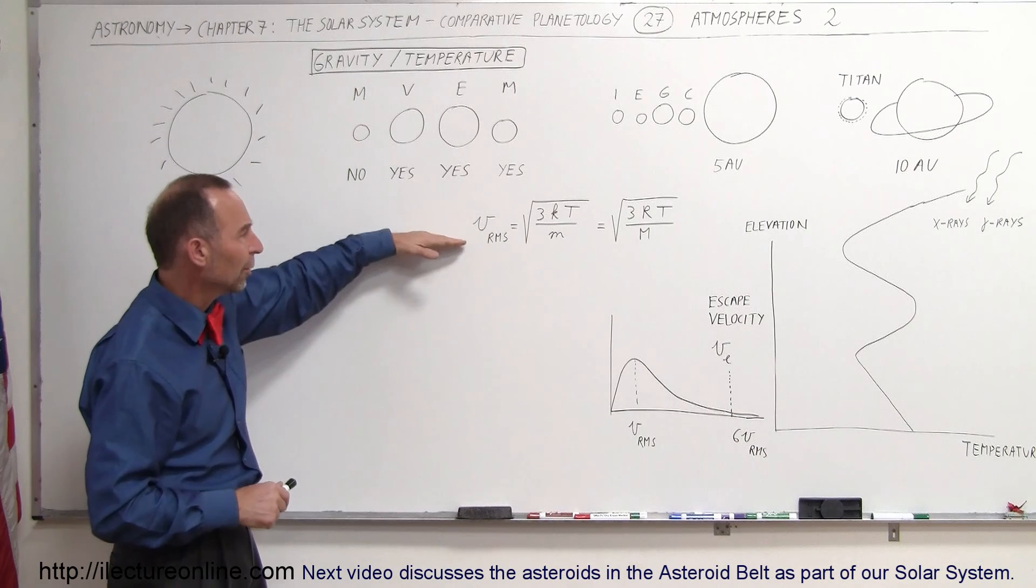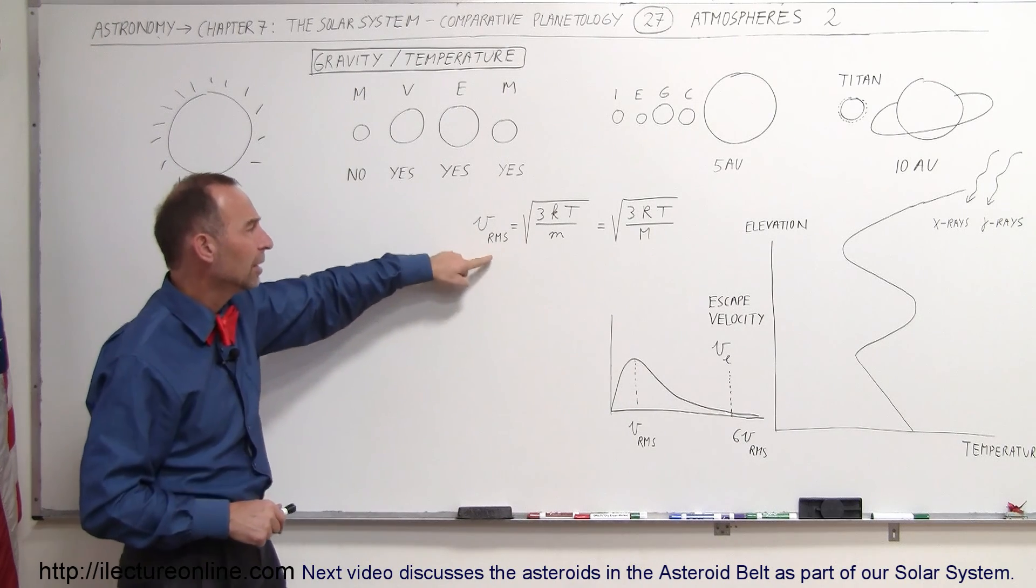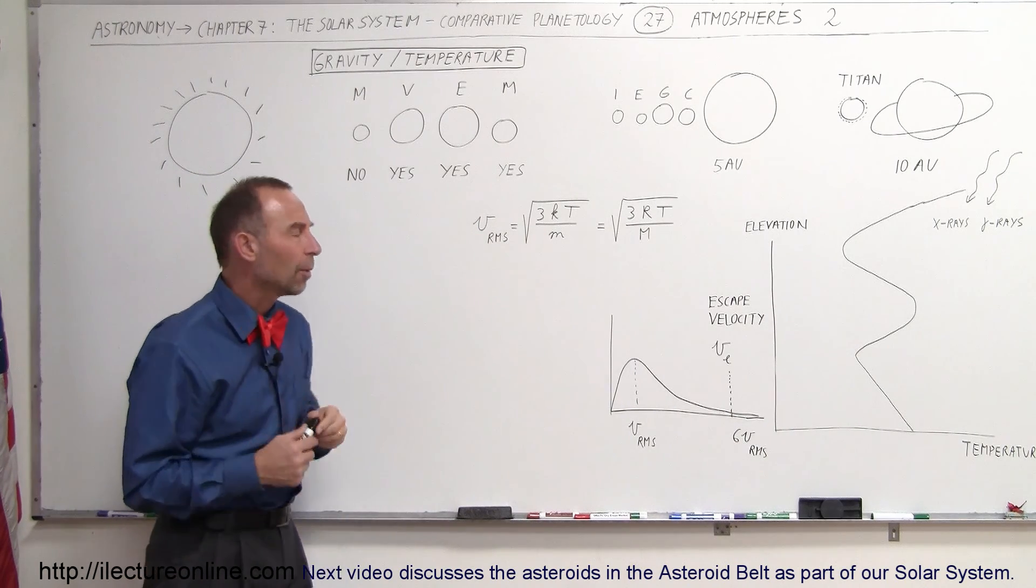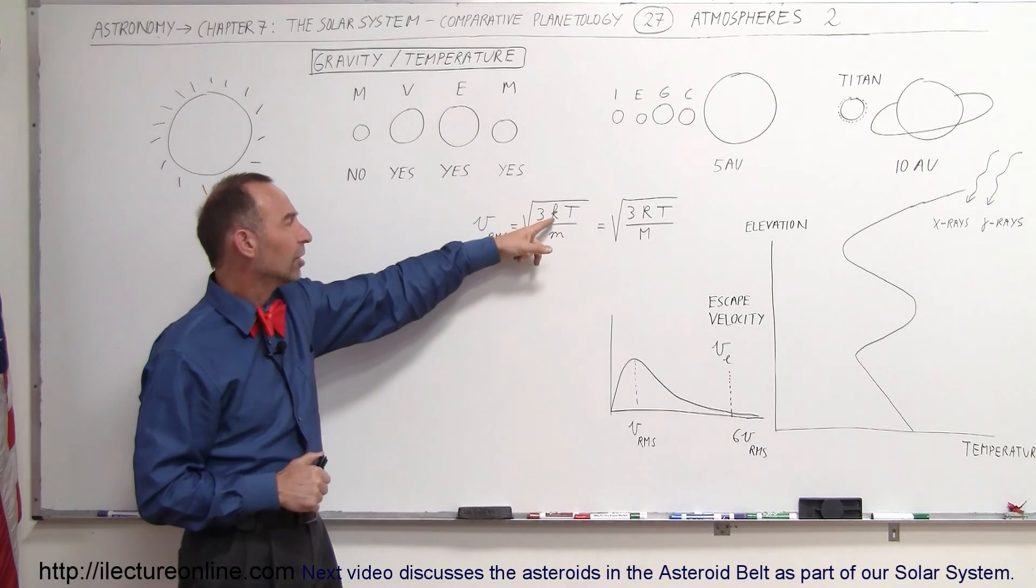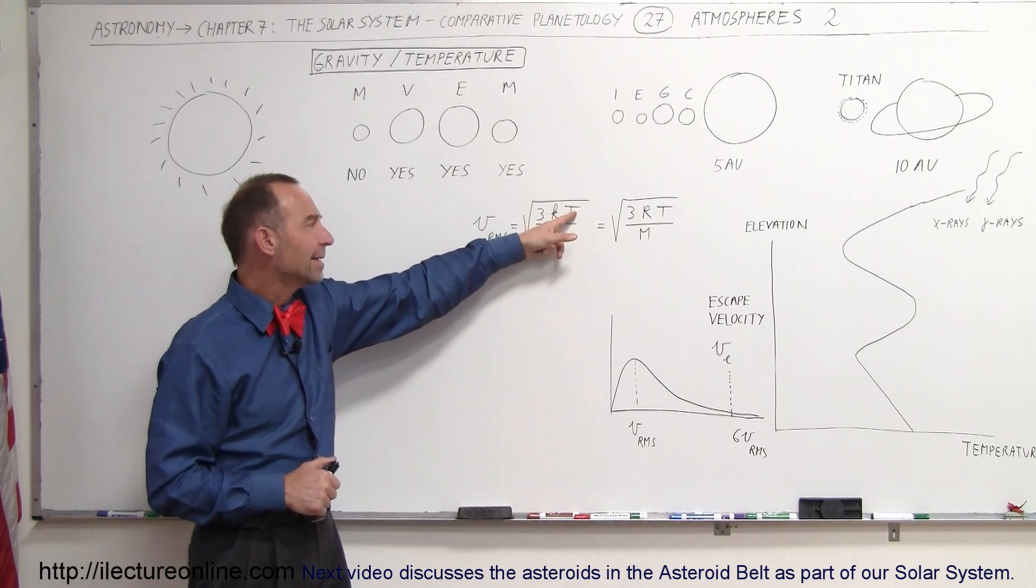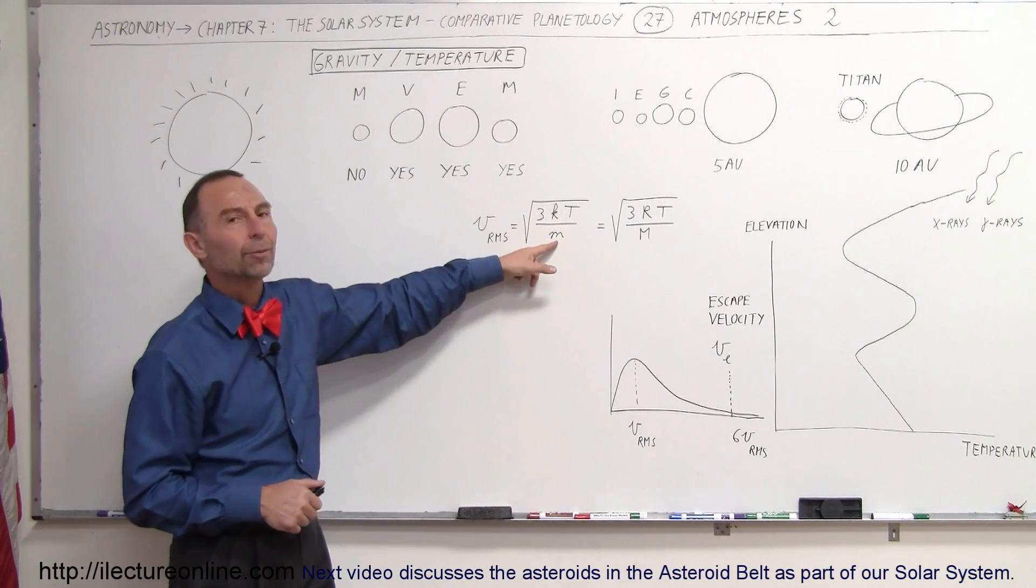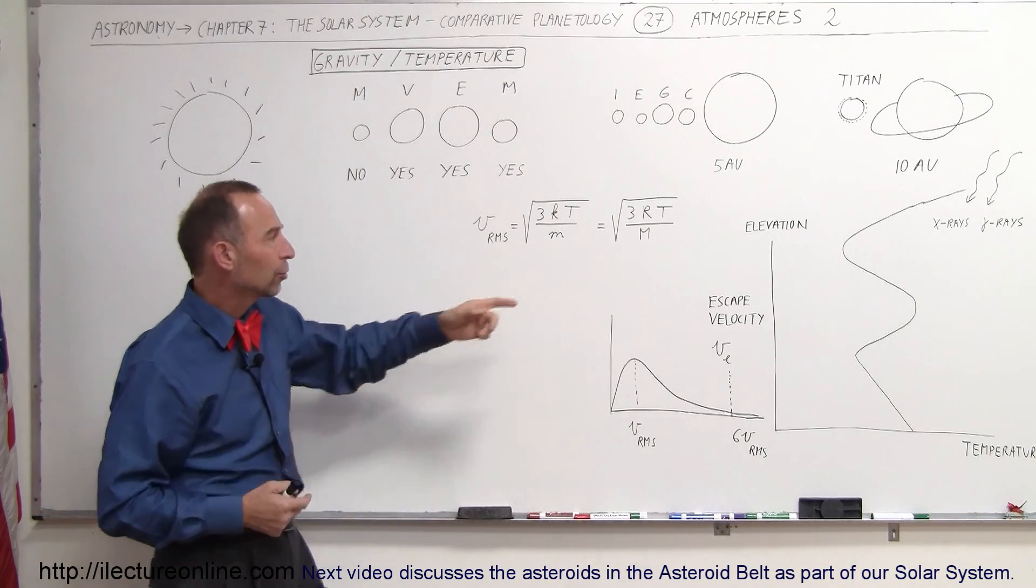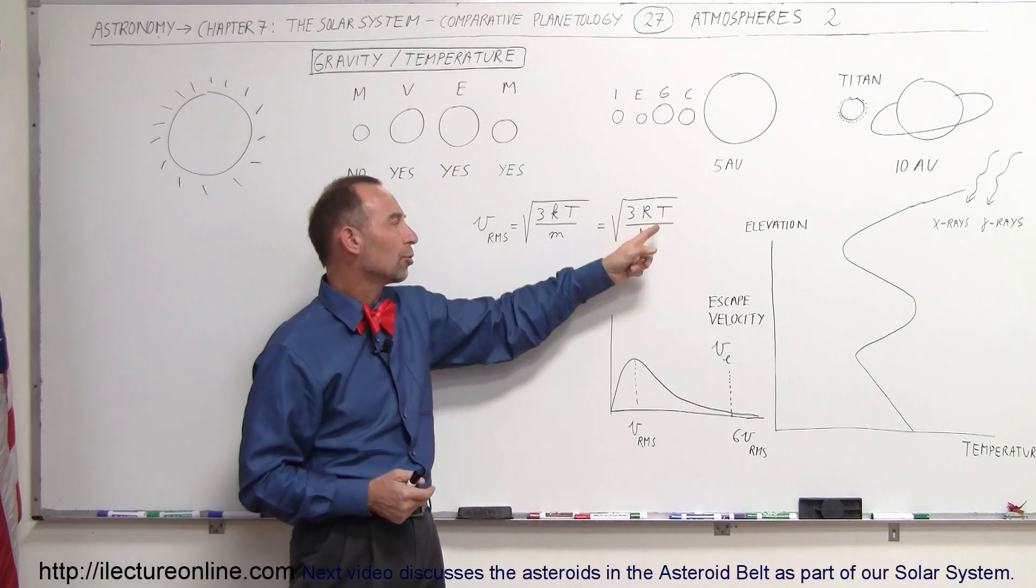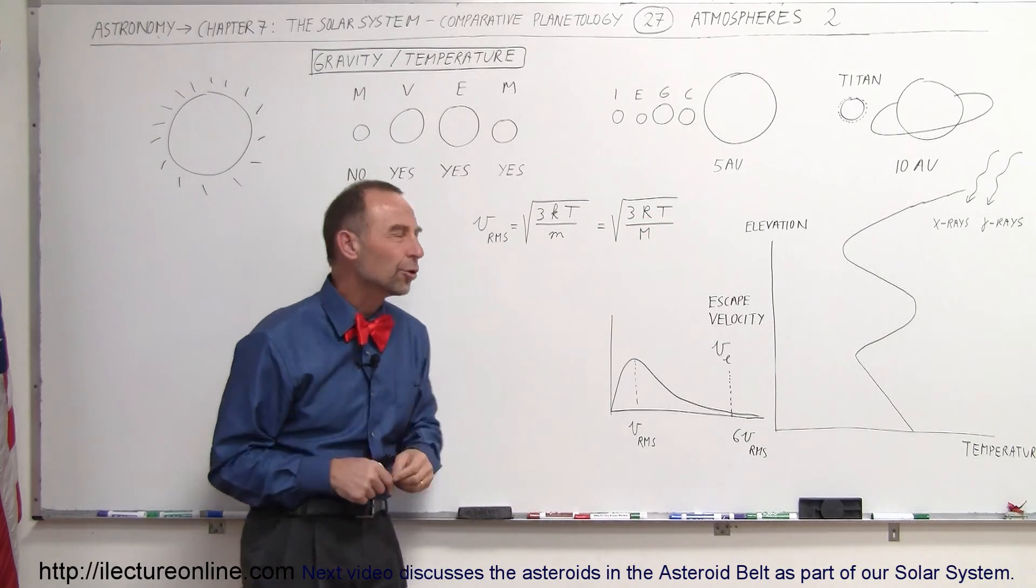Here's the equation that we use to find the RMS velocity for a gas molecule in the atmosphere. K is a constant, the Boltzmann's constant. T is the temperature, and M is the molecular mass. Now, converting that to the gas constant, temperature, and the molar mass, it's easier to use.